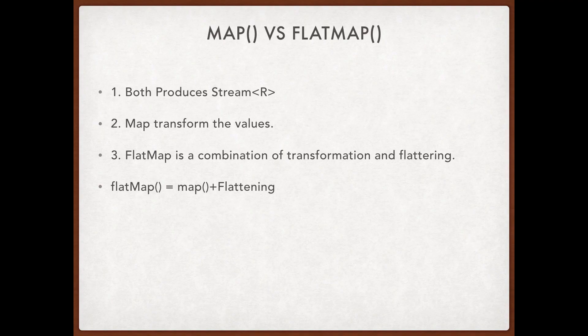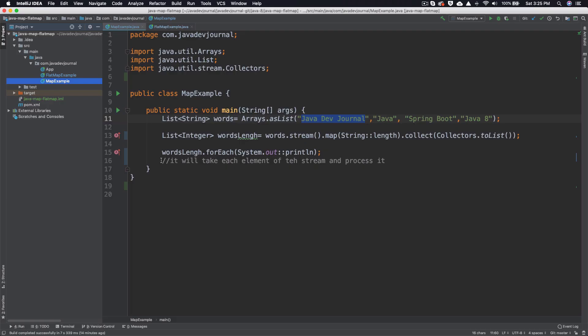One fundamental difference between map and flatMap is that map transforms the values, whereas flatMap transforms the values and also flattens them out. We will look into more detail about what that means, but those are the basic differences. To get an understanding of map and flatMap, I have a small straightforward example. I am creating a list of strings, and as output I want the length of each word.